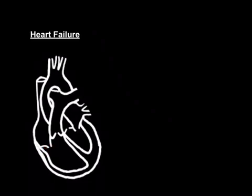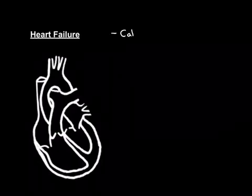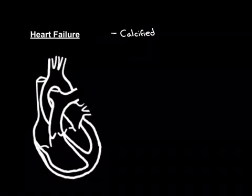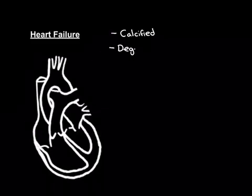As people get older, these valves become diseased. There are two main ways in which they become diseased — there are others, but those are far rarer. The main diseases that occur naturally with old age are calcifications, where the valves become calcified, and degeneration, where they can degenerate.